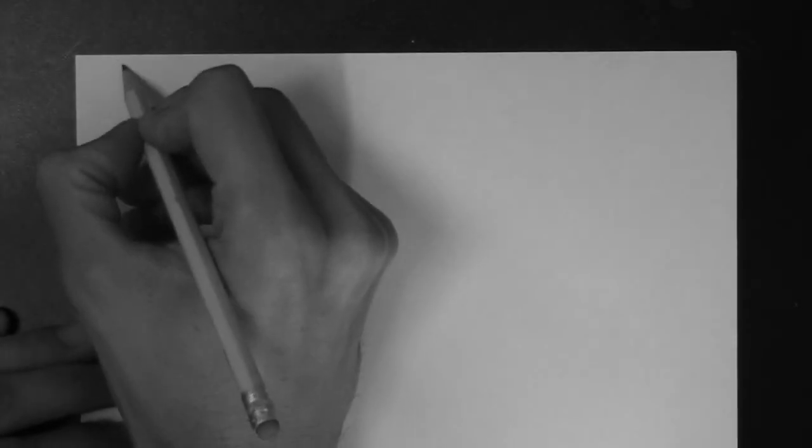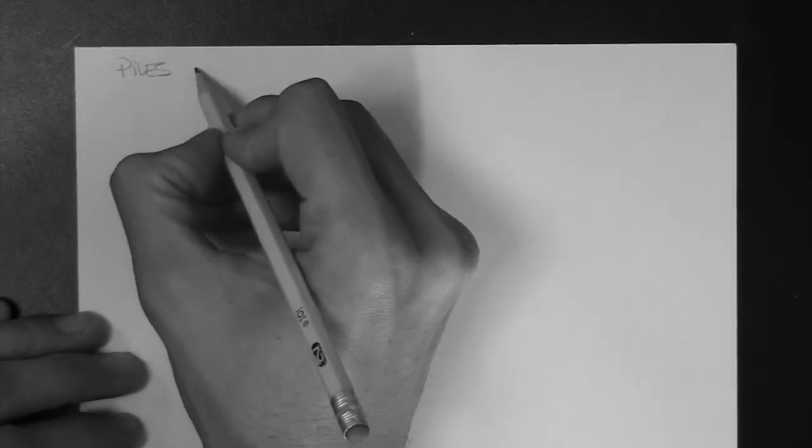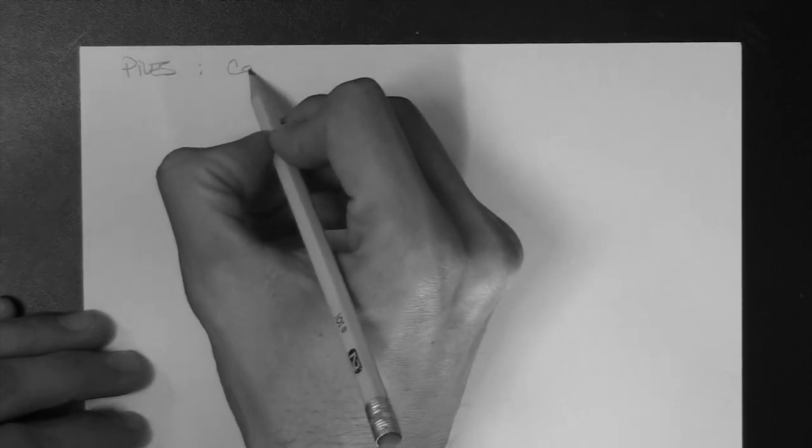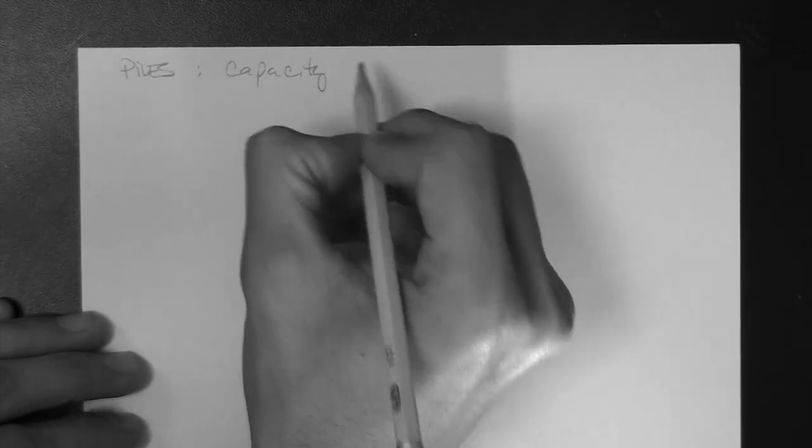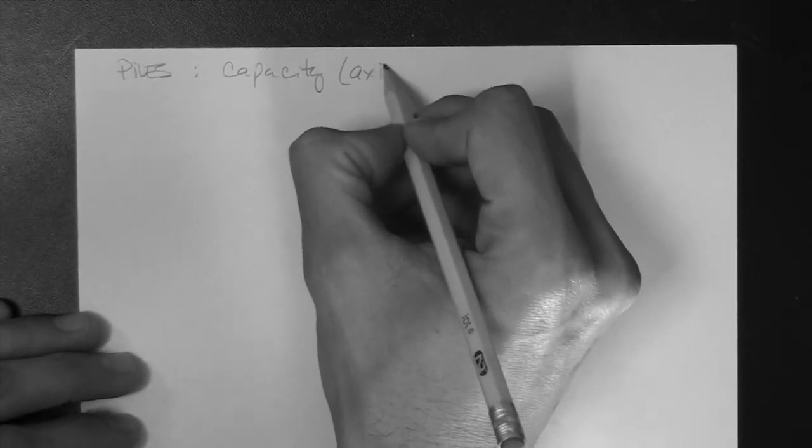Okay, in this video we're going to talk about the capacity of piles, the axial capacity, and in particular the components that produce this capacity. There are two components from which piles derive their axial capacity. We're going to describe them.